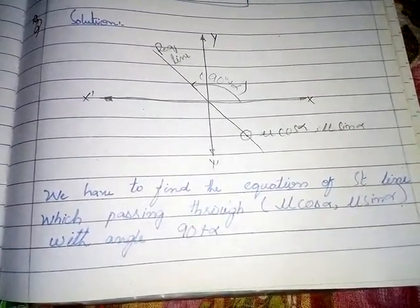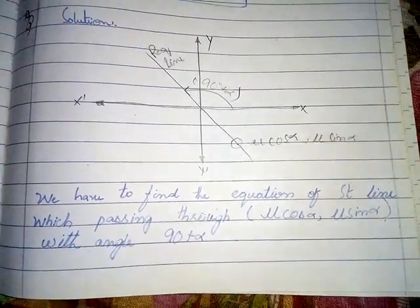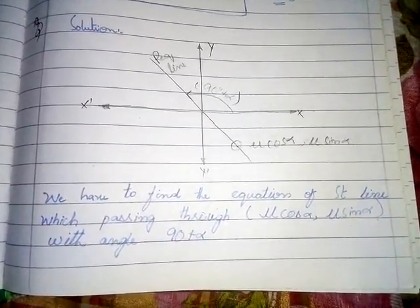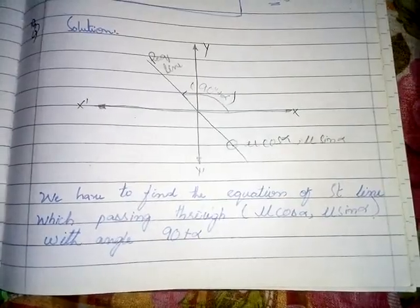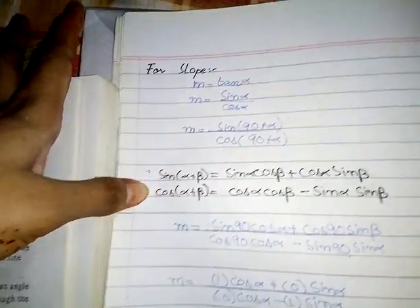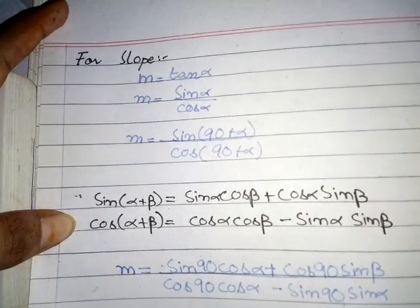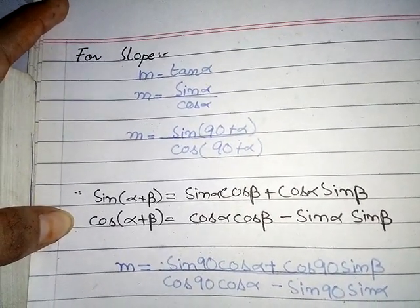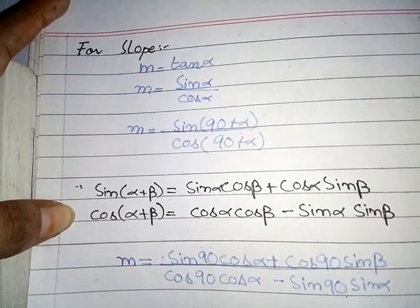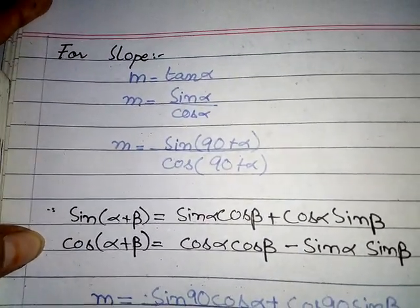We look at this diagram drawn according to the question. We have to find the equation of the straight line passing through (μcosα, μsinα) with angle (90° + α). For slope: m = tan(90° + α). We know tan α = sinα / cosα.